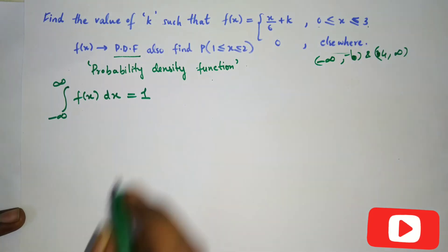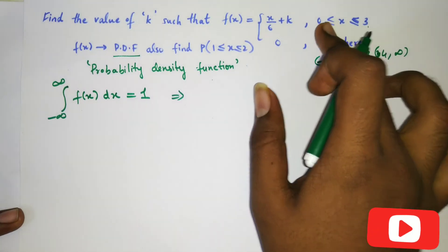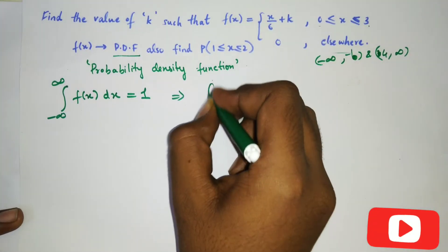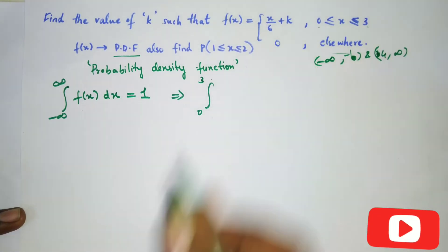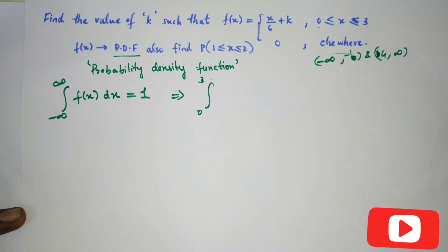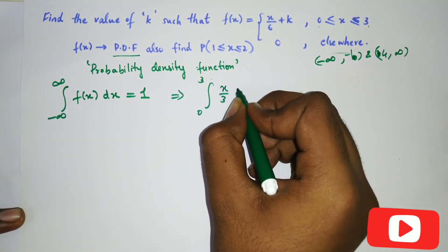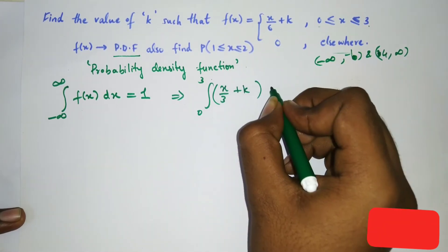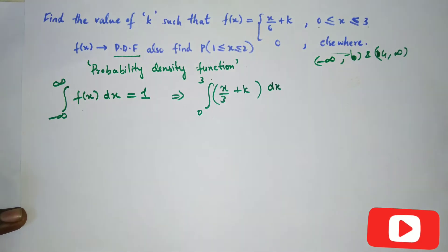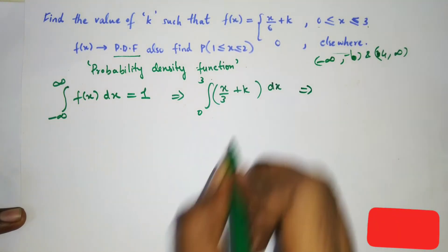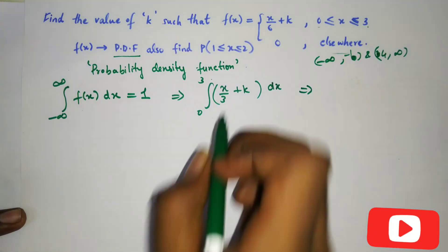From minus infinity to infinity, the intervals are given as 0 to 3, so we replace the limits with 0 to 3, because elsewhere f(x) is 0 so there is no need to include those regions. The function f(x) is x/3 plus k, so we integrate that from 0 to 3.